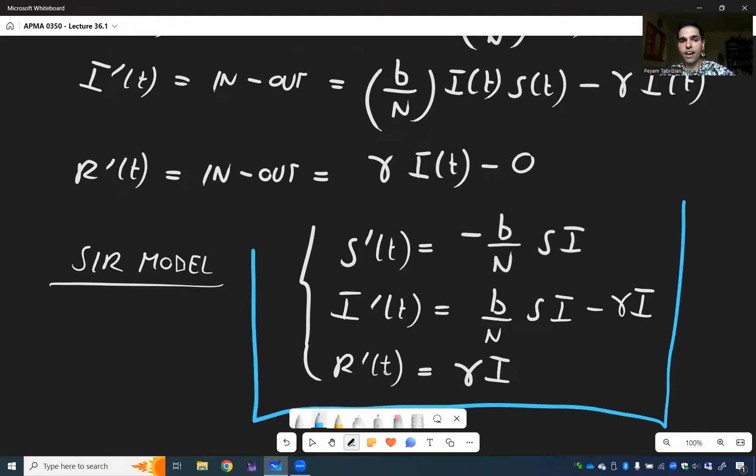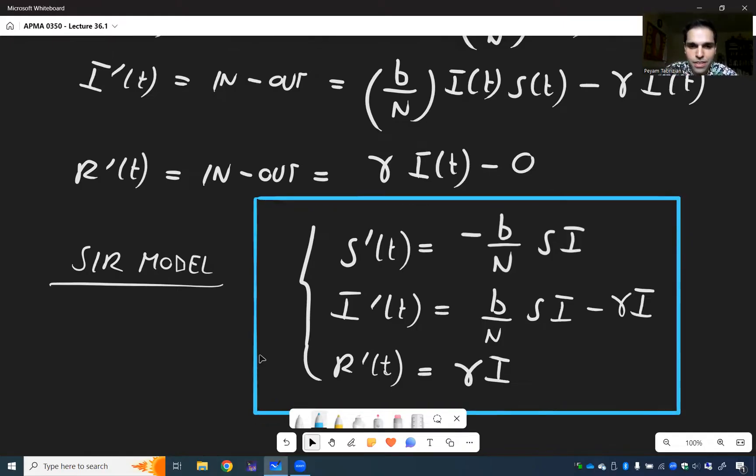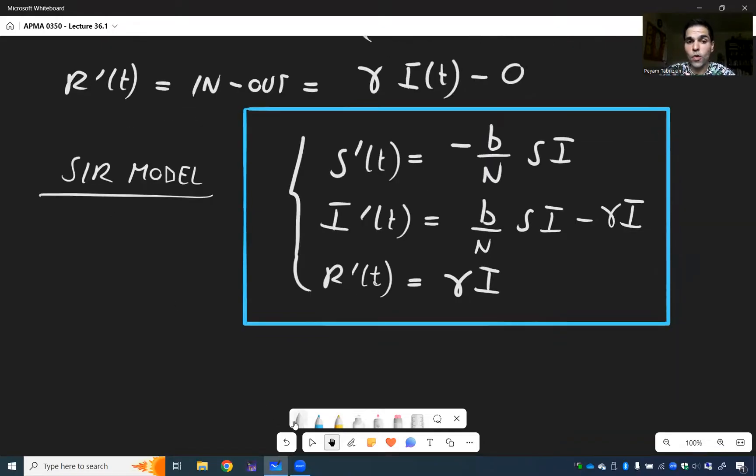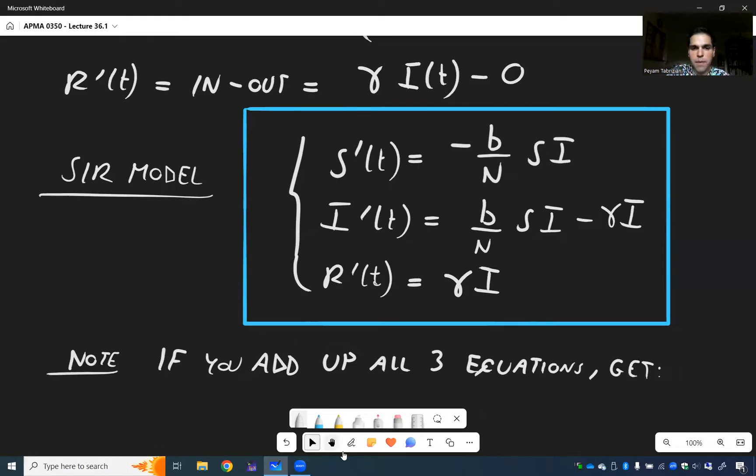And then we want to simplify this a little bit. So once again, that's the model we start with. And now we want to simplify it. Because it turns out one of those variables is sus. So we have one imposter here. Which one is it? In other words, one of the variables is completely unnecessary. And to notice that, let's just add up all those equations. So note, if you add up all three equations, you get the following.